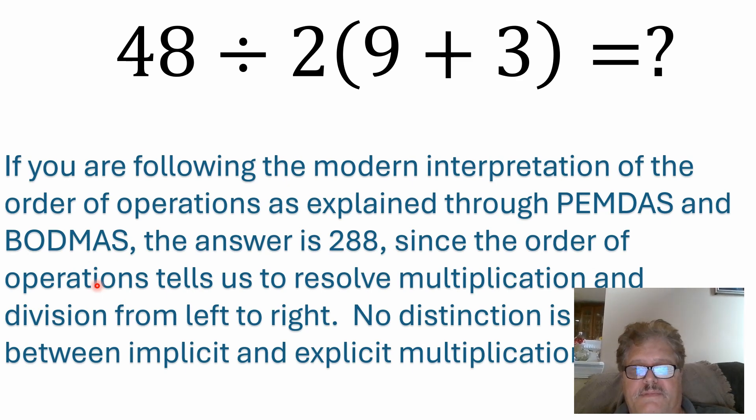But again, if you're following the modern interpretation of the order of operations, basically the way it's described in PEMDAS and BODMAS, the answer would be 288. And that's really just because the order of operations tells us to resolve multiplication and division from left to right. You know, no distinctions made between implicit and explicit multiplication.